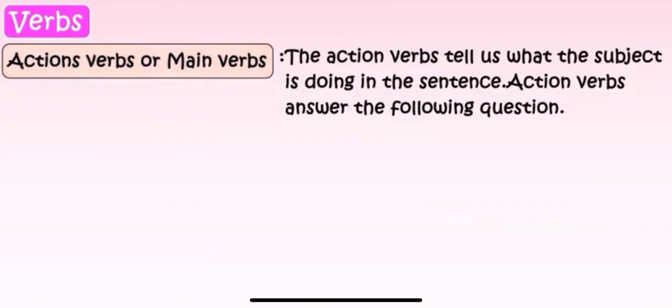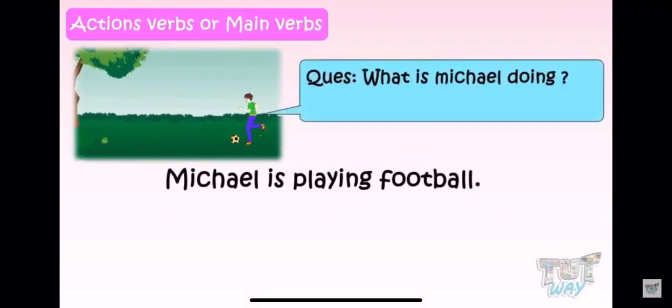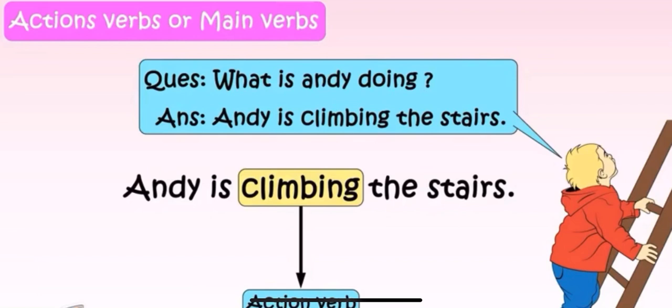Action verbs or main verbs tell us what the subject is doing in a sentence. Action verbs answer questions like: What is Michael doing? Michael is playing football. You can see in the picture that Michael is playing football. Playing is the main verb showing the action. Second, Andy is climbing the stairs. Climbing is the action verb.